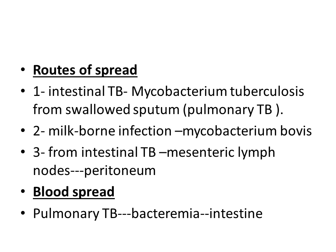What are the routes of spread? Intestinal tuberculosis is caused by Mycobacterium tuberculosis, and it is mainly from swallowed sputum in pulmonary tuberculosis by the patient himself. The second type is milk-borne infection, which is caused by Mycobacterium bovis, and the third is spread from intestinal tuberculosis to mesenteric lymph nodes.